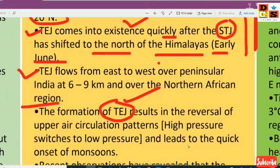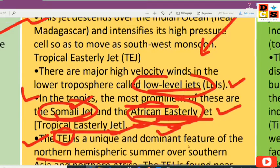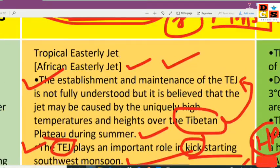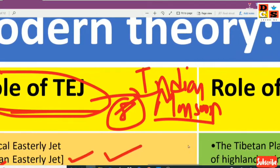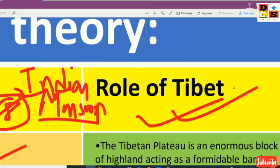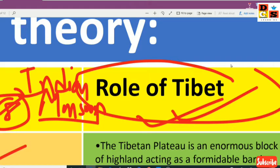So that is all about the role of the Tropical Easterly Jet Stream on the Indian Monsoon. In the next video, we will discuss the role of the Tibetan Jet Stream on the Indian Monsoon. Stay updated for the next part — thank you.